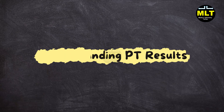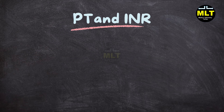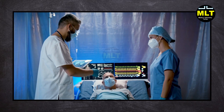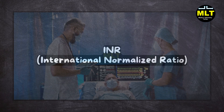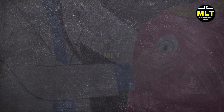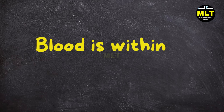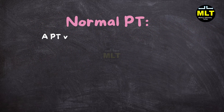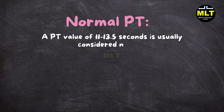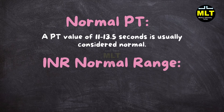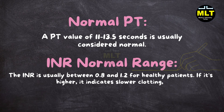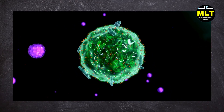Understanding PT results — PT and INR. Typically, PT values range from 11 to 13.5 seconds. For patients on anticoagulants, we calculate the INR (International Normalized Ratio) to provide a standardized value, helping doctors ensure patients' blood is within a safe clotting range. The INR is normally between 0.8 and 1.2 for healthy patients. If it's higher, it indicates slower clotting, which may suggest anticoagulant therapy or clotting disorders.